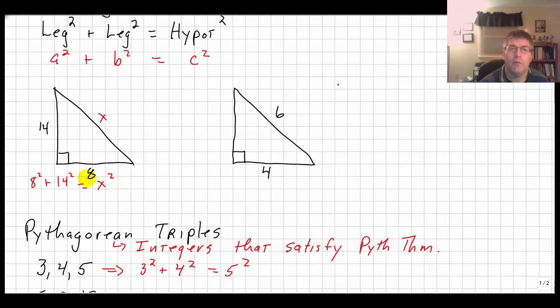You may have learned in geometry that you can reduce these triangles by the same factor. 8 is 4 times 2 and 14 is 7 times 2. So if we're going to reduce these by a factor of 2, or split it into 4 times 2 and 7 times 2, we're going to do our Pythagorean Theorem.